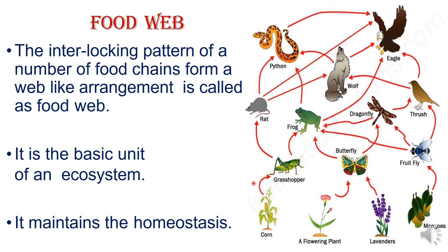The ecosystem contains organisms like the grasshopper, frog, and rat. Suppose if these particular organisms are removed, it affects the ecosystem. The food web maintains homeostasis.